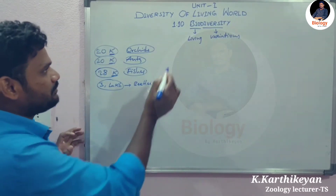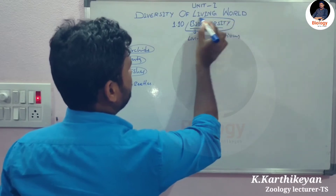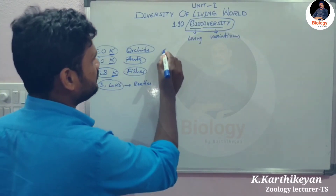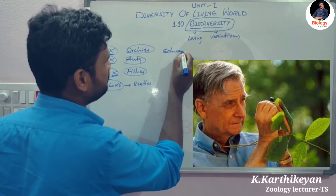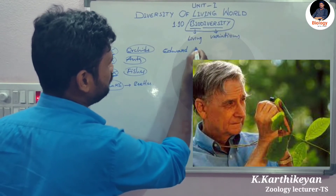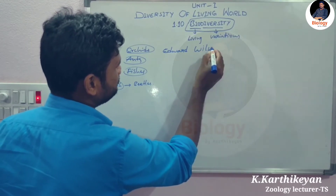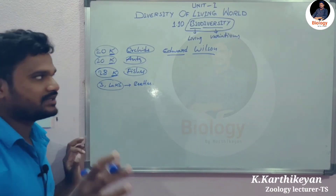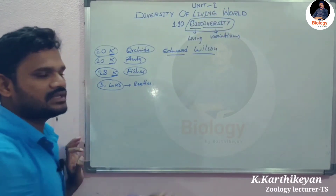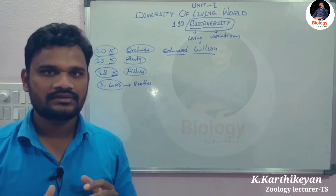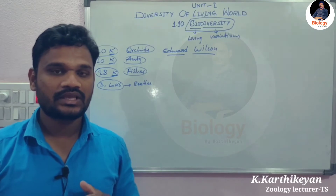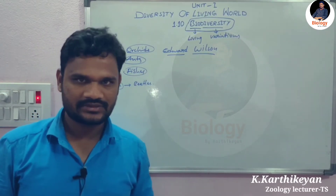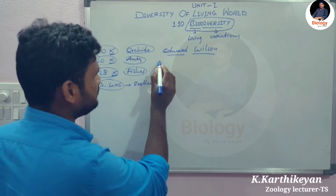The term 'biodiversity' was popularized by Edward Wilson. Remember this name — Edward Wilson was the scientist who popularized this term. In biodiversity, we can observe variations at three levels.